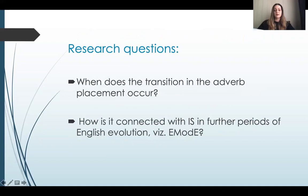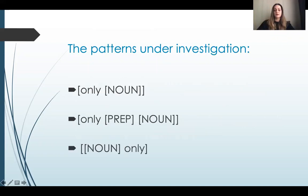These figures trigger the question of in what period this transition in adverb placement occurs and how it is connected with information structure of the sentence in further periods of English evolution — that is, Early Modern English. The current study attempts to investigate adverb 'only' when marking noun phrases in the corpus of Early English Books Online. Since the occurrence of 'only' in noun phrases throughout the corpus reaches more than 50,000 instances in total, it is proposed to confine this paper to the time frame of 1470s to 1590s and analyze around 4,000 instances.